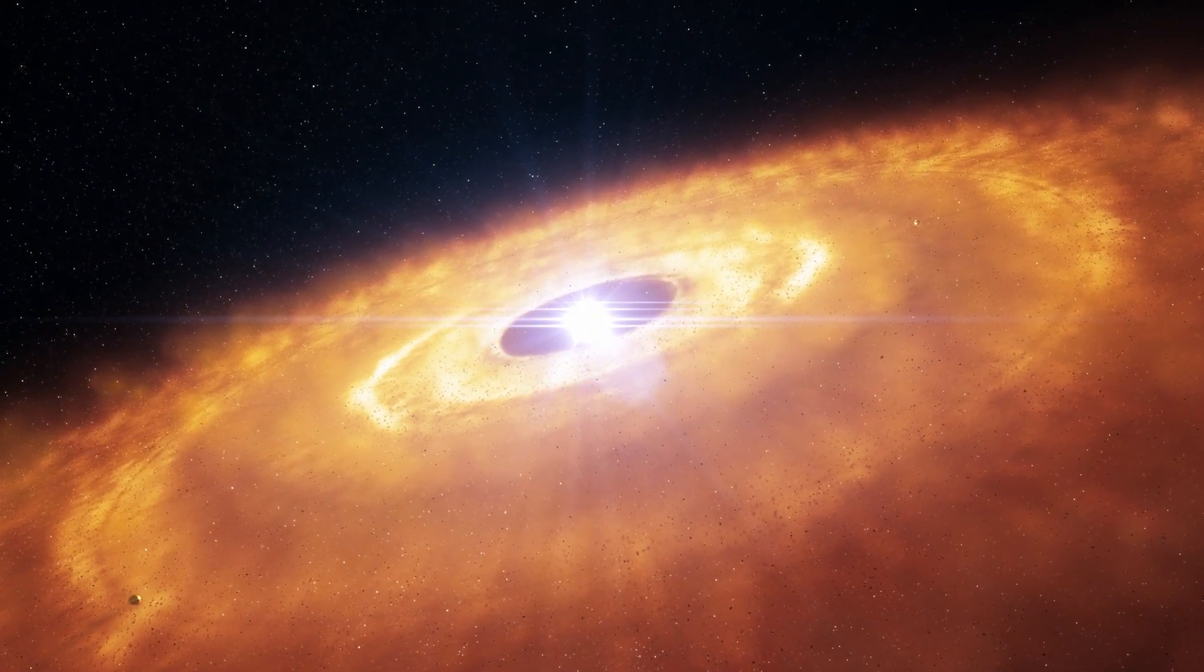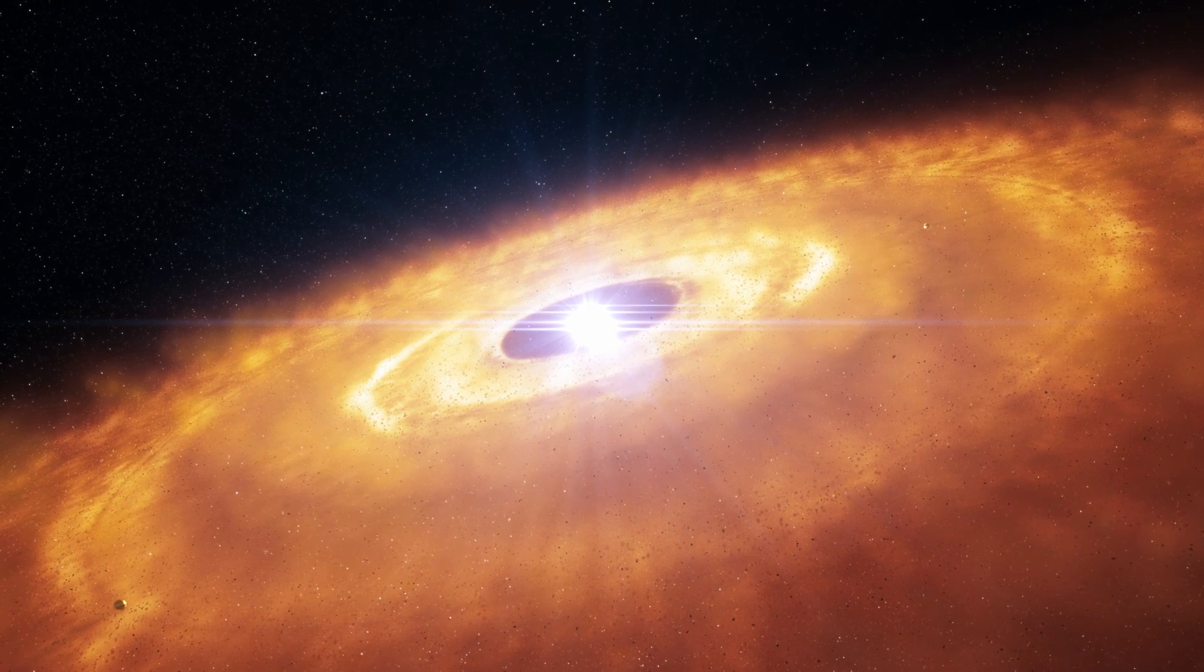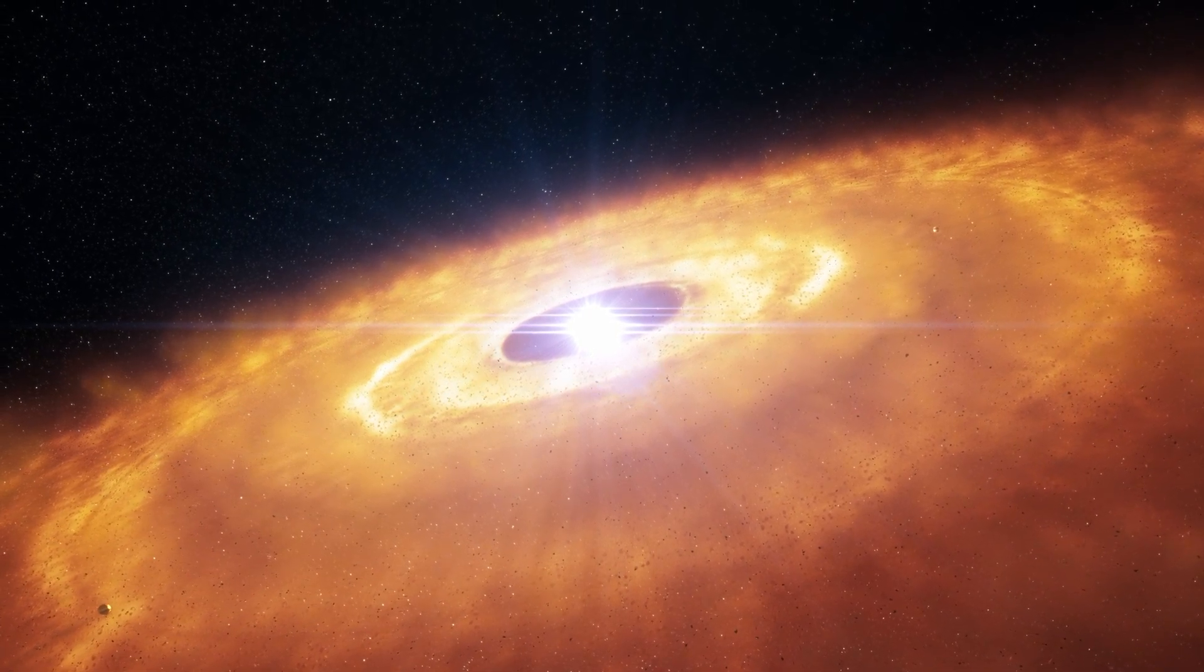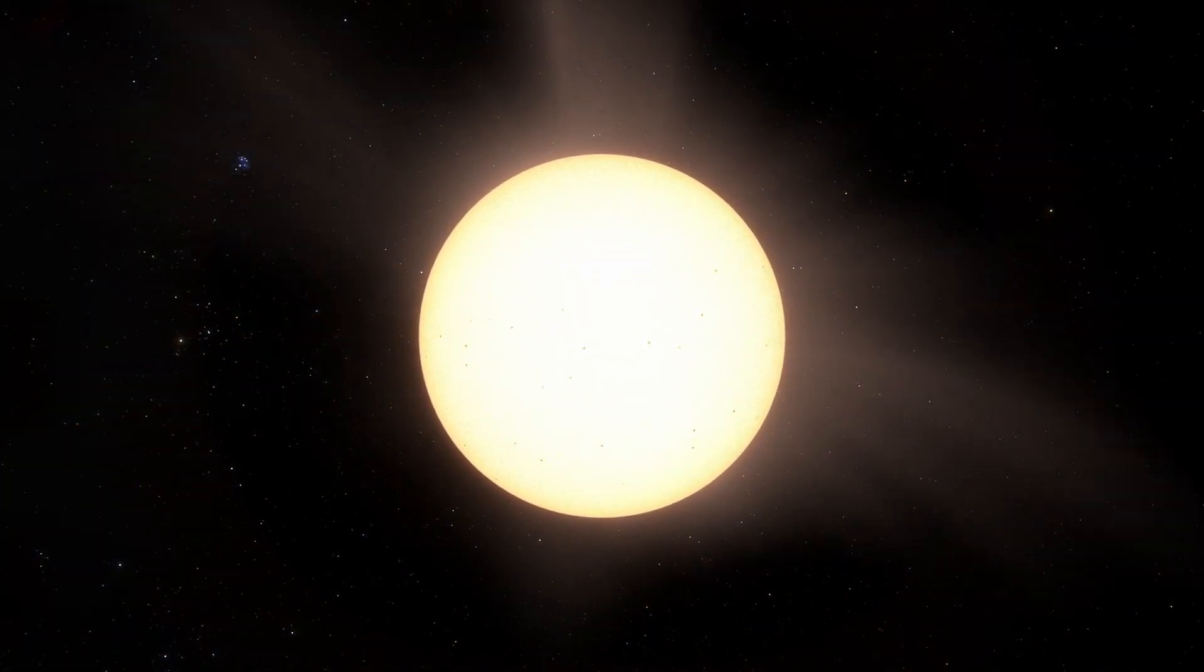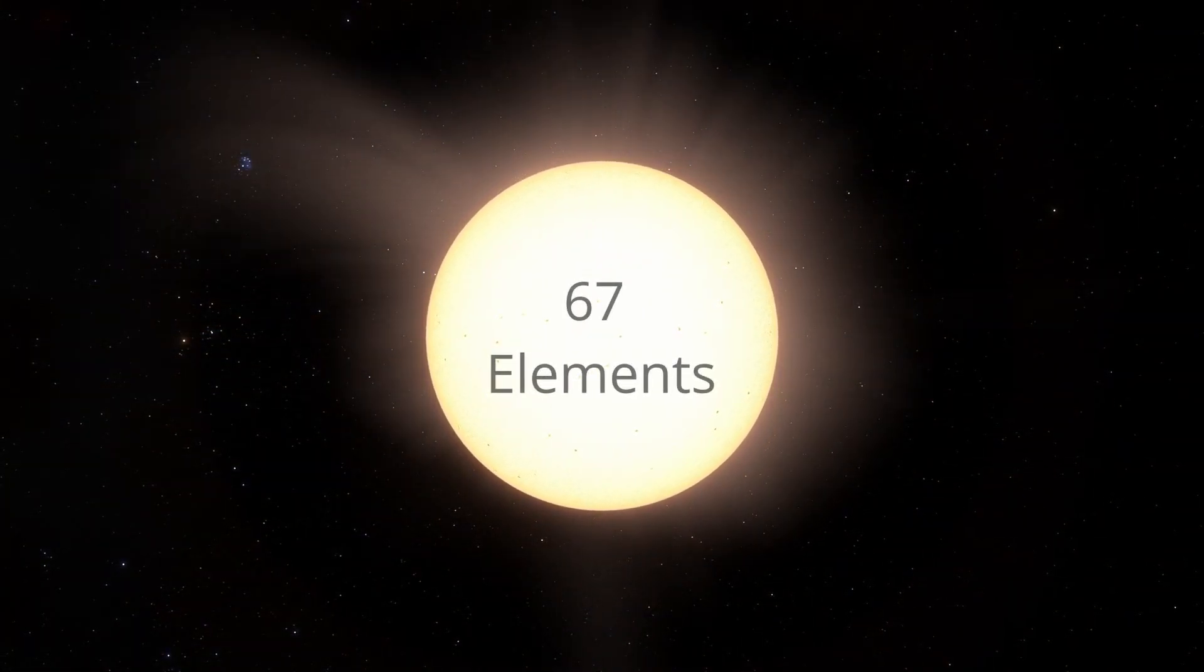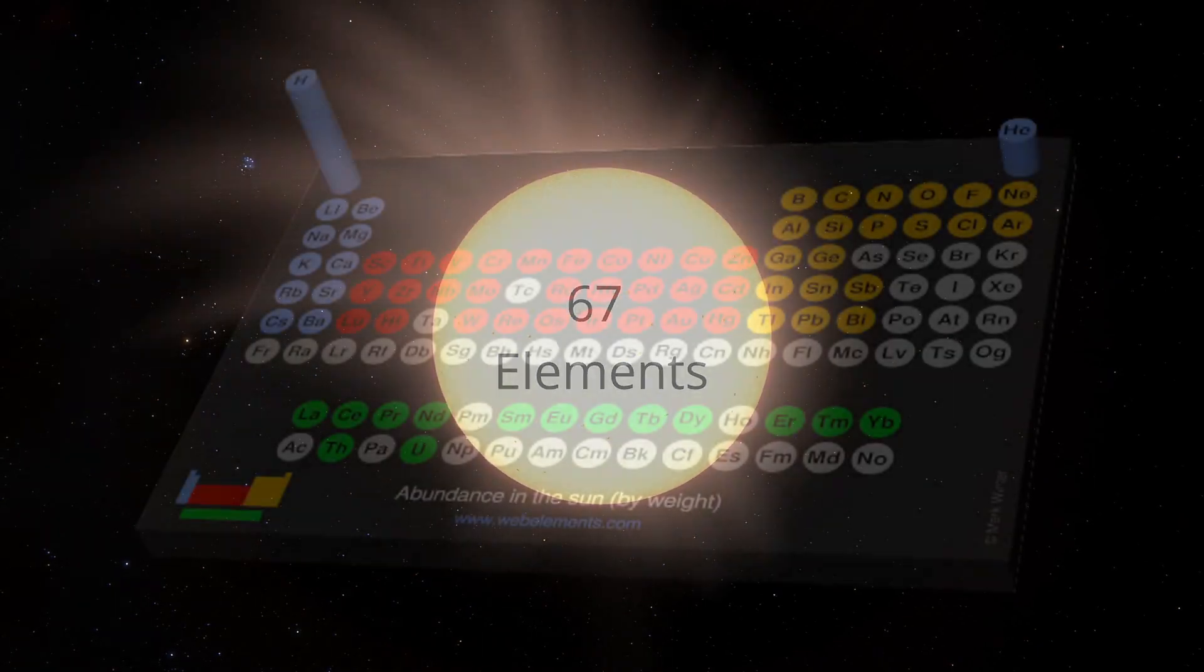These elements are scattered throughout the solar system, and the planets are largely made from them, but most of these elements remain locked within our sun. From what we can tell, it contains over 67 elements, over half the known periodic table.